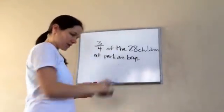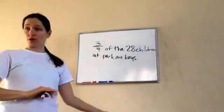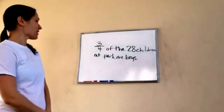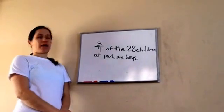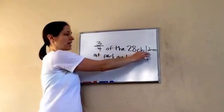Now, let's divide this up and try to determine how many boys there are, how many girls there are. So the first thing I want to ask you is how many children are at the park? 28. Okay, so that's the total number, 28 children.